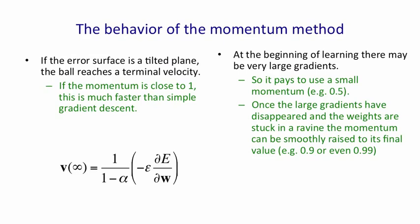Once the large gradients have disappeared, and you've reached the sort of normal phase of learning, where you're stuck in a ravine, and you need to go along the bottom of this ravine without sloshing to and fro sideways, you can smoothly raise the momentum to its final value. Or you could raise it in one step, or that might start an oscillation.